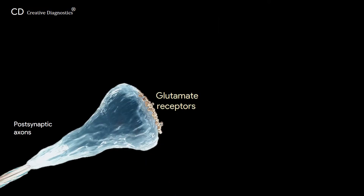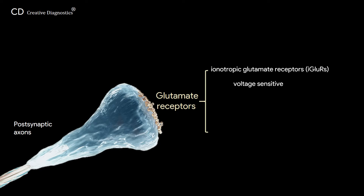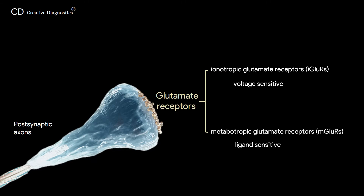Glutamate receptors are transmembrane proteins. They are numerous and highly complex and can be divided into two main categories: voltage-sensitive ionotropic glutamate receptors, which are glutamate-gated ion channels, and ligand-sensitive metabotropic glutamate receptors, which are glutamate-activated G-protein-coupled receptors.